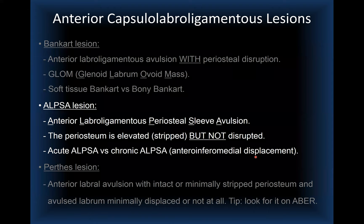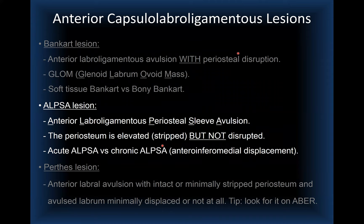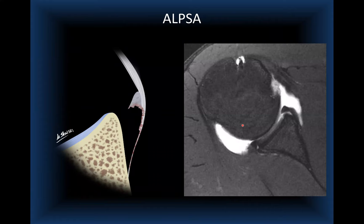ALPSA — anterior labral periosteal sleeve avulsion — differs from Bankart in that the periosteum is stripped and elevated but not disrupted; there is no complete detachment. It can be acute or chronic, non-displaced or displaced. A diagram from Dr. Skalski shows the labrum holding its normal morphology with periosteum stripped and varying degrees of displacement, still attached to the scapular neck.